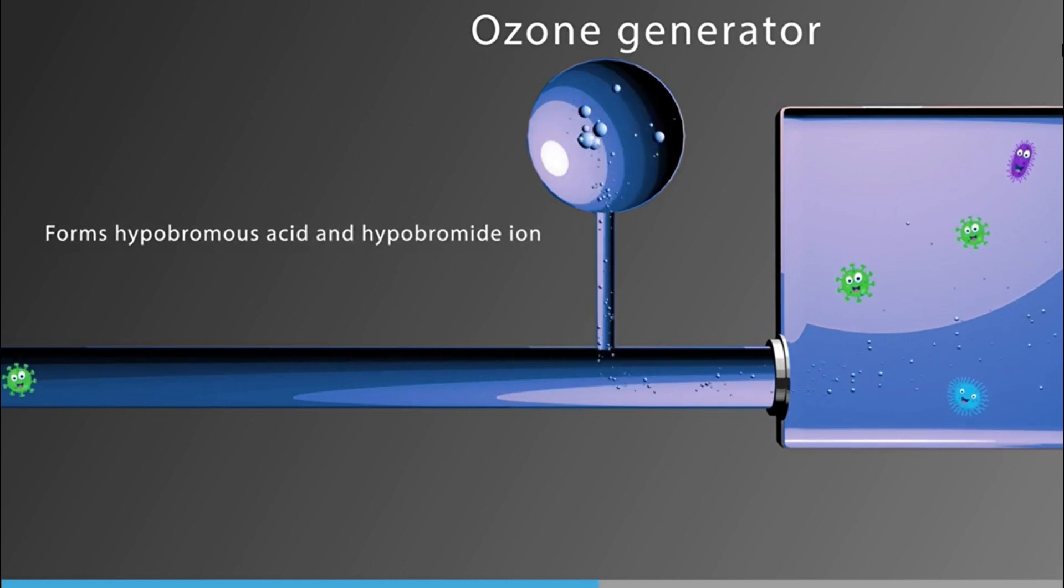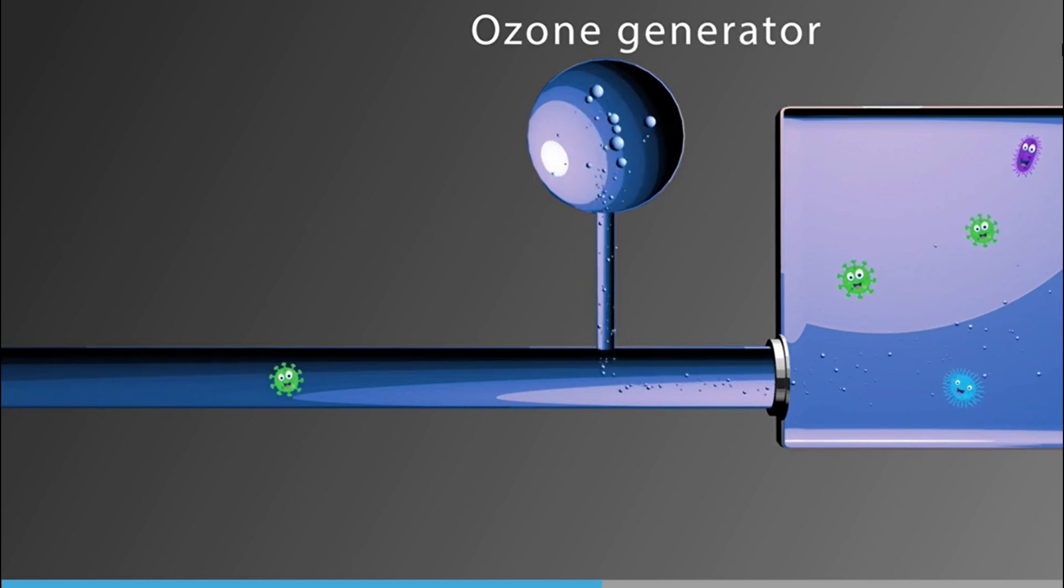Where ships take on freshwater as ballast, for example in ports located in lakes or rivers, brominated compounds are not formed and the ozone alone acts as disinfectant. Waters with high particulate and organic matter require higher doses of ozone to ensure sufficient disinfection.